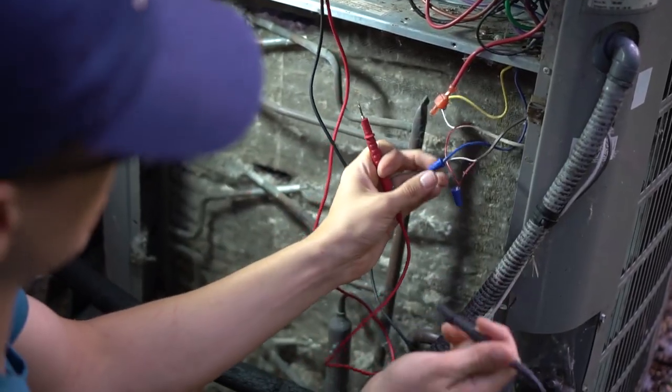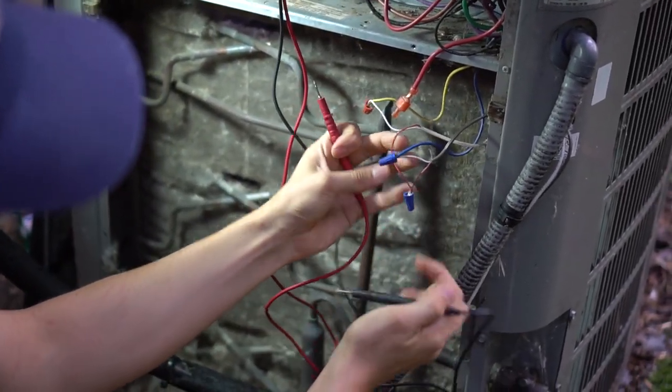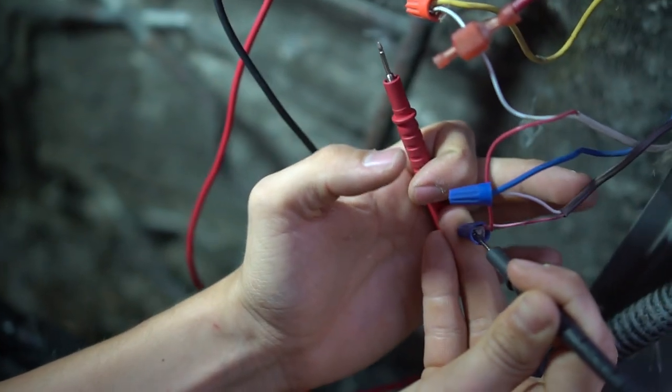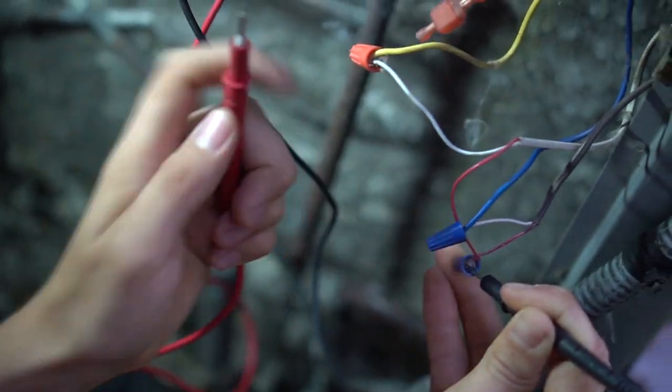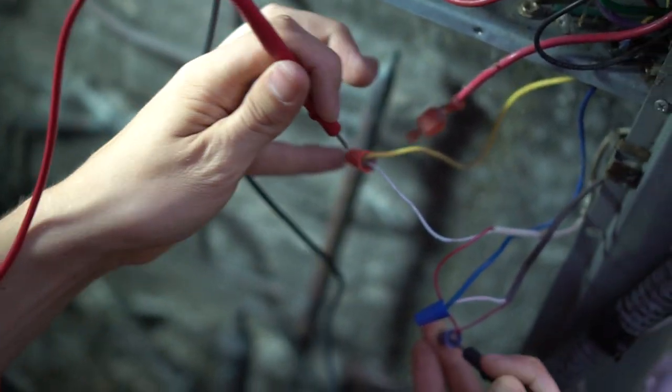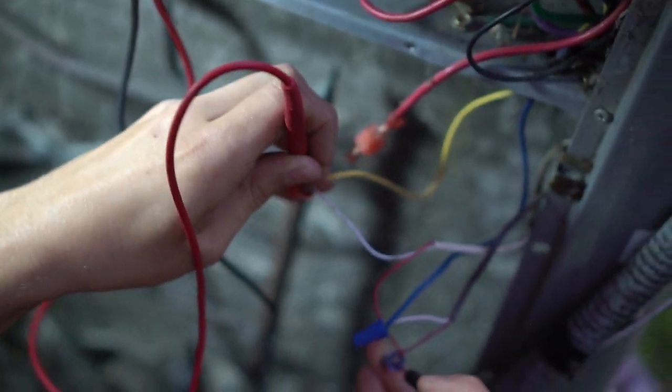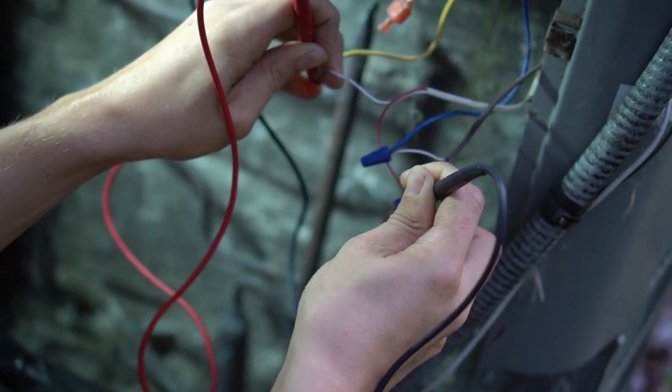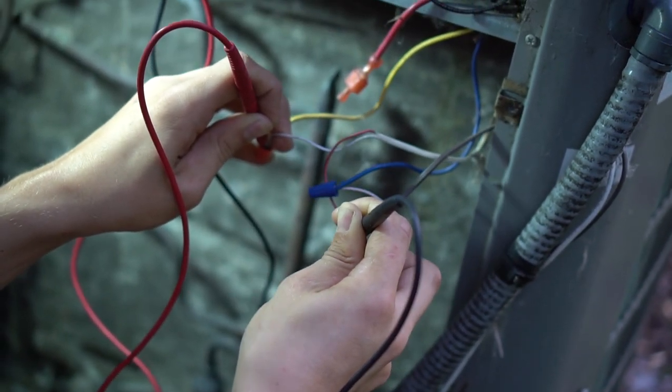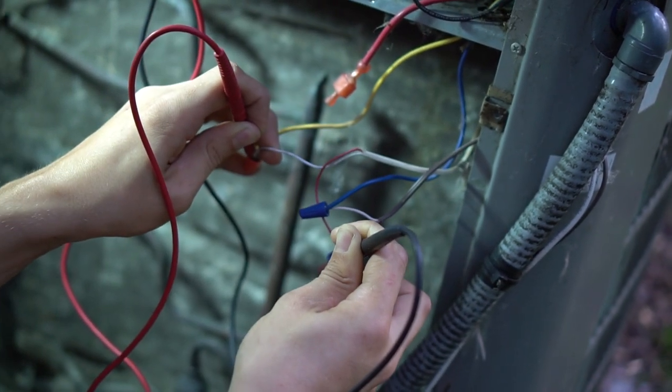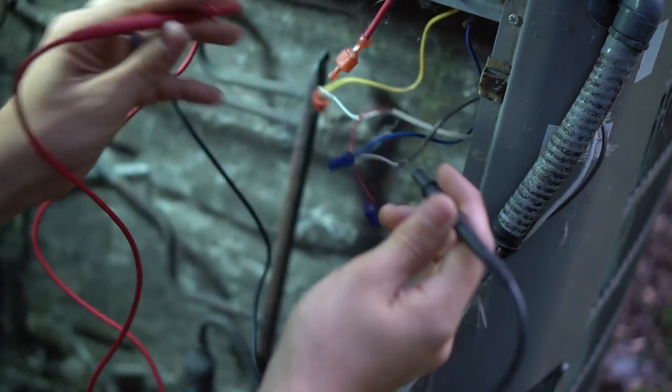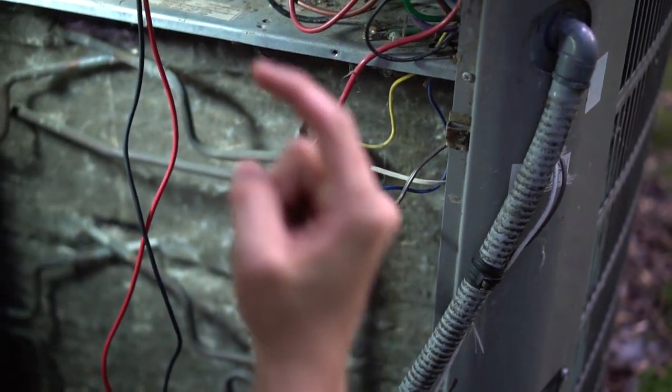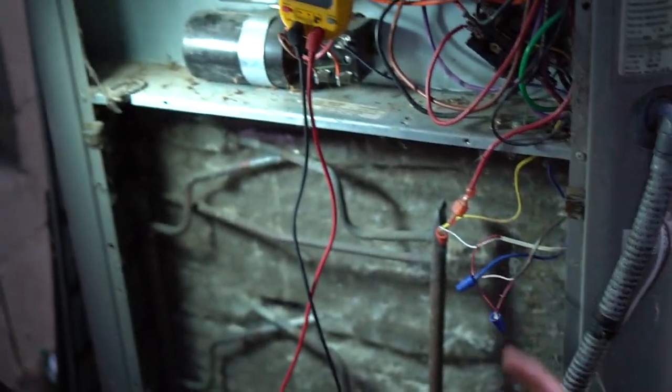So the power goes into the power saver switch through this red wire right here. So if you put one lead into the wire nut that's connected to the furnace control board thermostat wire, and then put your other lead on the other side of that power saver switch, you should have zero volts if the switch is closed. If you have 24 volts, that actually means that that switch is open and that power switch is defective or you're being cycled off during this time. So basically that power saver switch is simply wired in series between your contactor coil and the furnace control board.